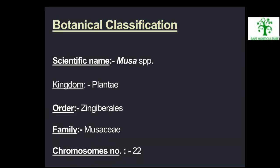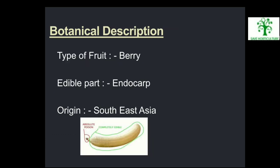Botanical Classification: Scientific Name is Musa species, Kingdom Plantae, Order Zingiberales, Family Musaceae, Chromosome Number is 22. Botanical Description: Type of fruit is Berry, edible part of banana is endocarp, and origin of banana is Southeast Asia.